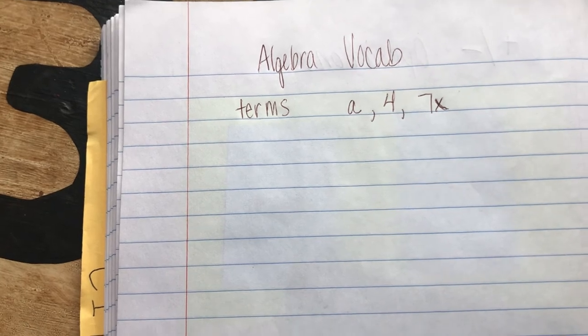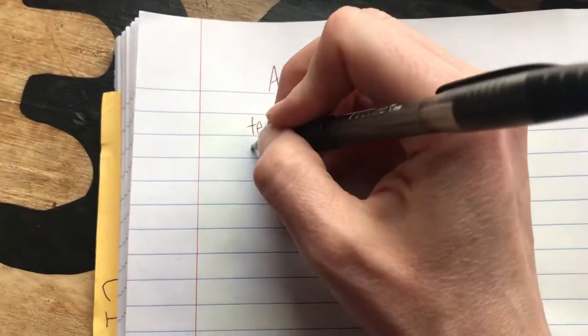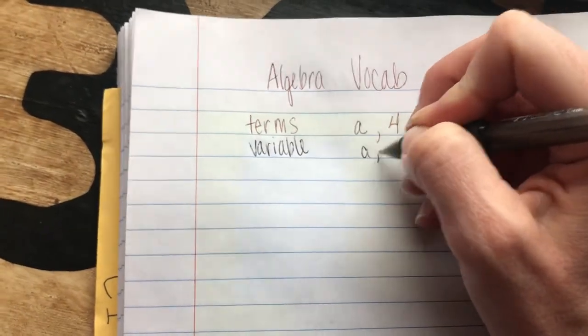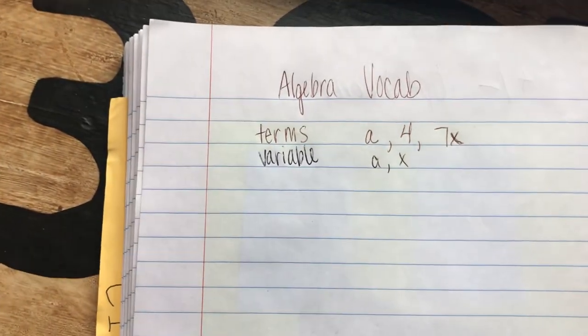Another vocabulary word you need to know is variable. A variable is a letter, like A or X in the above example.